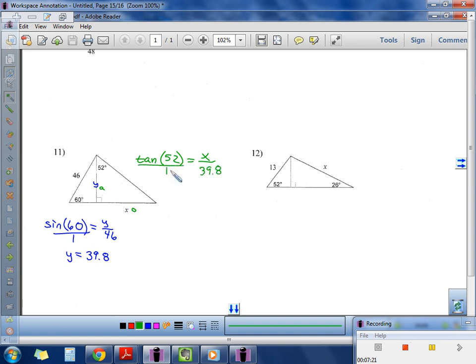Now we're going to cross-multiply. This is one of the easy ones. X times 1 is X. The other side is tangent of 52, close parentheses, times 39.8. And what do we get?